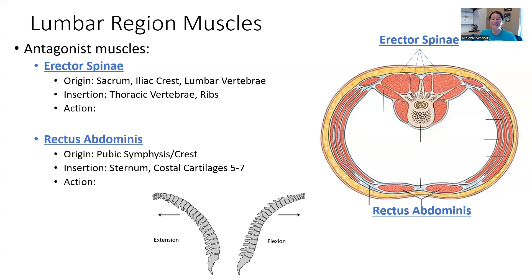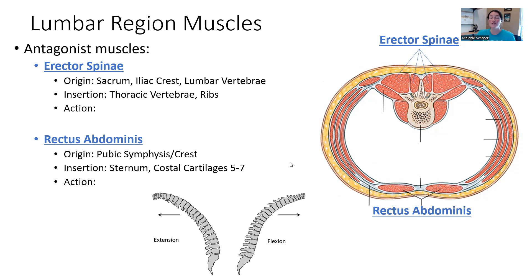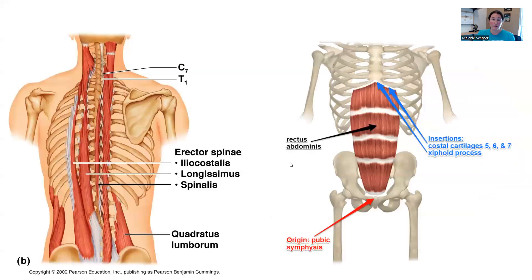So these are opposite, antagonist muscles. This image is very similar to a model we have in the lab — here is the spine, the dorsal side and the ventral belly side. The erector spinae are on the posterior side of the vertebrae; the rectus abdominis is on the anterior side, not attaching to the spine itself but attaching to the ribs, which can then move the spine. These are antagonist muscles.